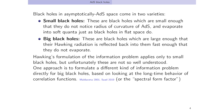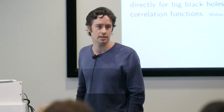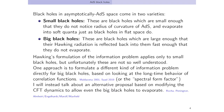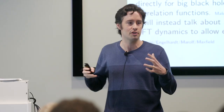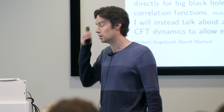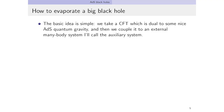One approach is to formulate a different kind of information problem directly for the big black holes. There is something like that, based on looking at the long-time behavior of correlation functions, which Juan proposed in 2001. And then Phil Saad wrote a very nice paper about this recently. There are also related ideas where instead of looking at correlation functions, you look at the spectral form factor. But I'm instead going to talk about an alternative idea: instead of trying to find some different version of the information problem for big black holes, you modify the CFT dynamics so that even the big black holes are allowed to evaporate.